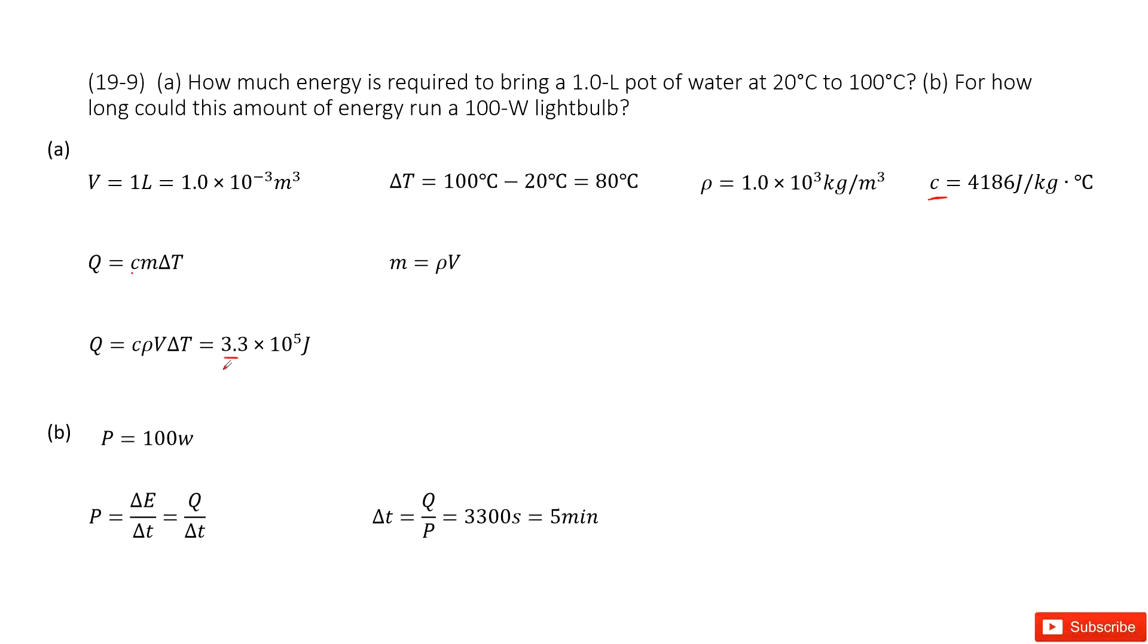For how long could this amount of energy run a 100 W light? So you can see it tells you the power. The power is 100 W. And then the total energy is given. So we just use total energy divided by the power.